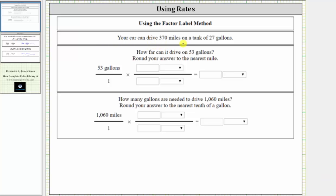Your car can drive 370 miles on a tank of 27 gallons of gas. How far can it drive on 53 gallons? How many gallons are needed to drive 1,060 miles?